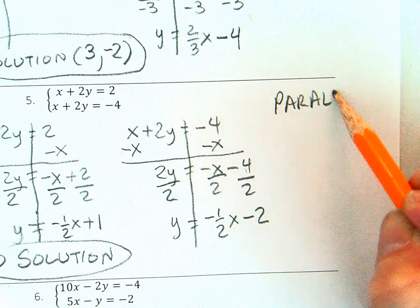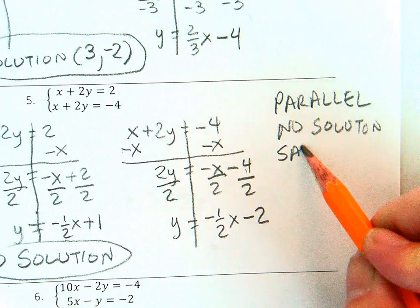To know if they are parallel, they must have the same slope but different y-intercepts.